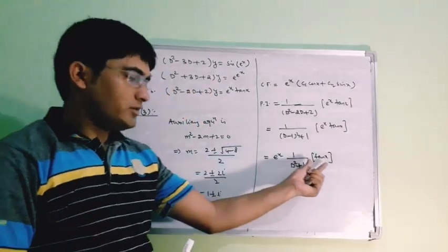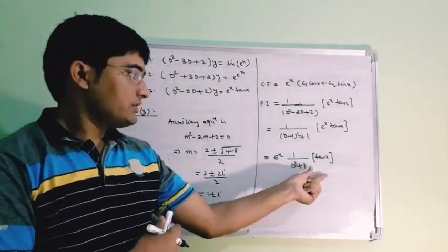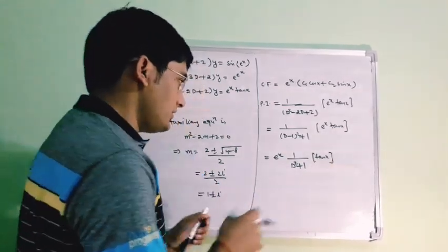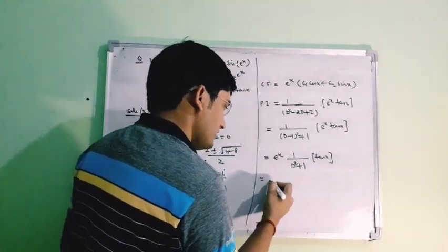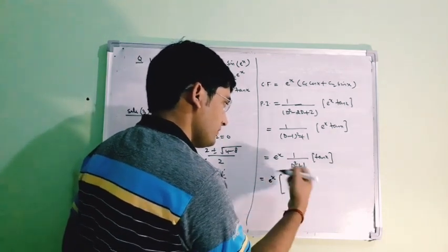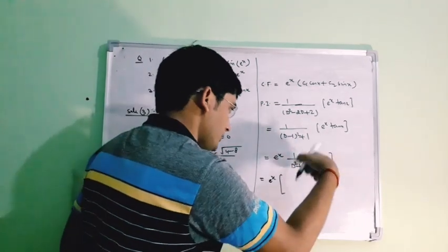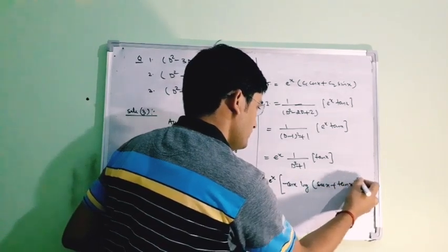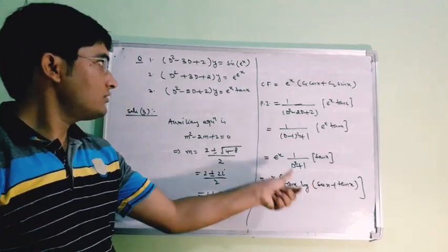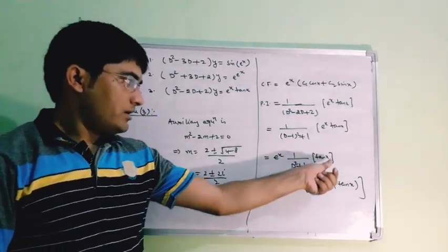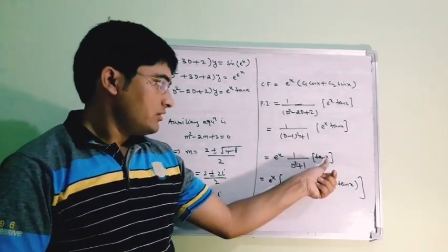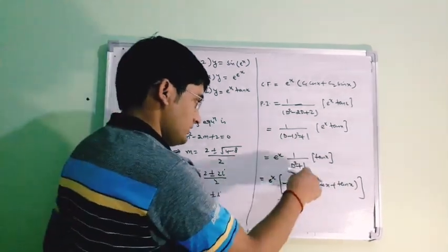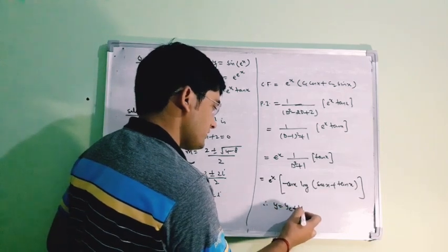The remaining part, 1/(D²+1) of tan(x), is the same as the previous problem. From the previous result, the particular integral of that was −cos(x)·log|sec(x)+tan(x)|. So our particular integral here is e^x·[−cos(x)·log|sec(x)+tan(x)|]. Therefore, the general solution is the complementary function plus the particular integral: y = e^x(c₁cos(x) + c₂sin(x)) − e^x·cos(x)·log|sec(x)+tan(x)|.